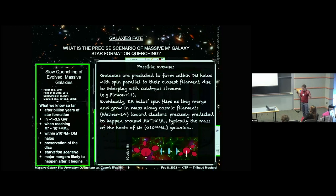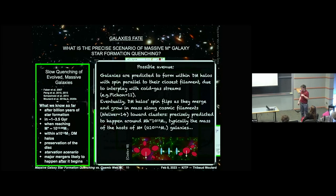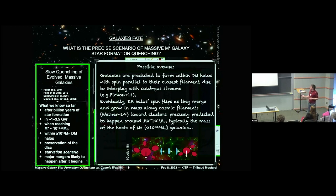In this framework, galaxies form far from cosmic filaments but with a spin parallel to filaments, due to the interplay with cold gas flows. When galaxies grow and their dark matter halos merge along cosmic filaments toward groups and clusters, you may eventually reach a halo mass regime where this spin alignment changes. This happens precisely for dark matter halo masses around 10 to the 12 — the mass of halos hosting M-star galaxies. This scenario could explain an increased probability of finding mergers among M-star galaxies.